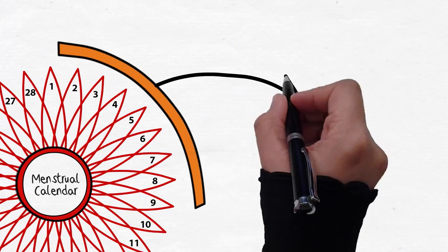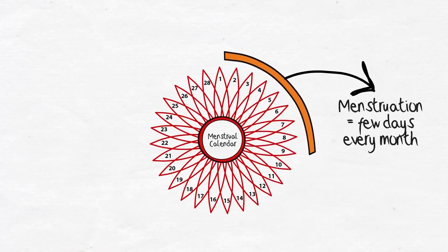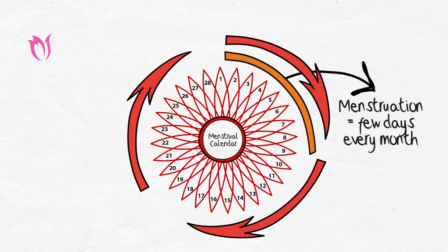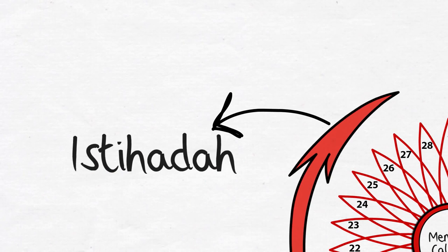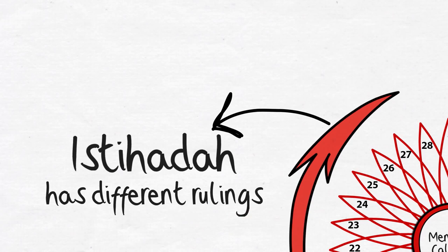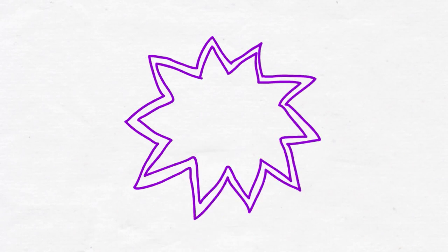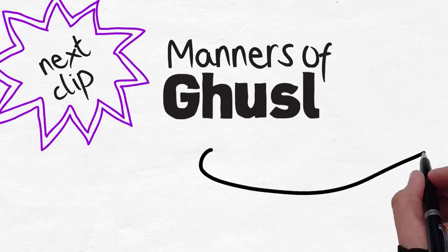That is, the flow comes almost regularly. But some sisters experience a non-stop flow throughout the month, or it stops for just a day or two. This is not haid, it is called istihadah, and the ruling concerning it is completely different from menstruation. I will insha'Allah discuss about this specific condition in one of the later clips. In the next clip, we learn the manners and etiquettes of gusul.